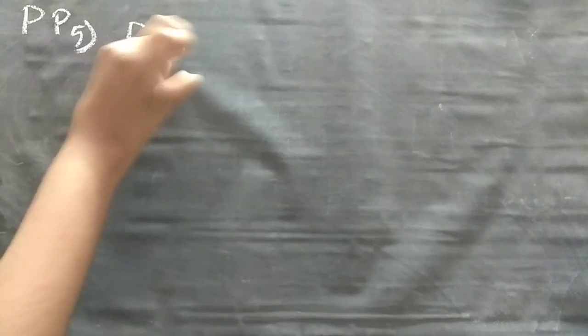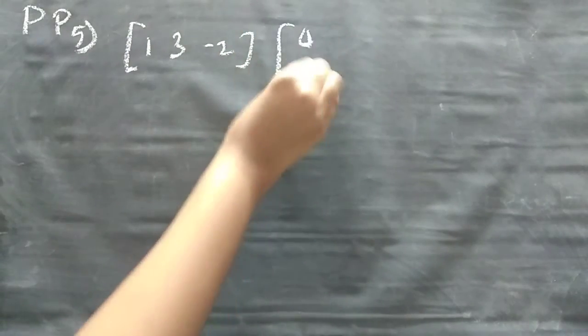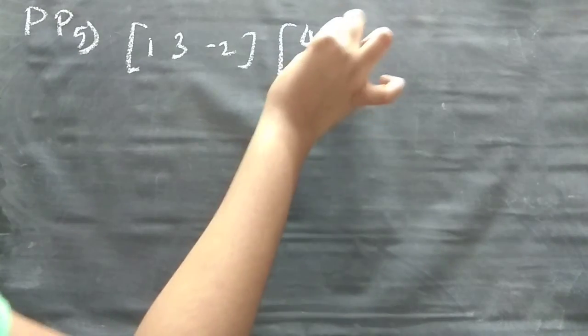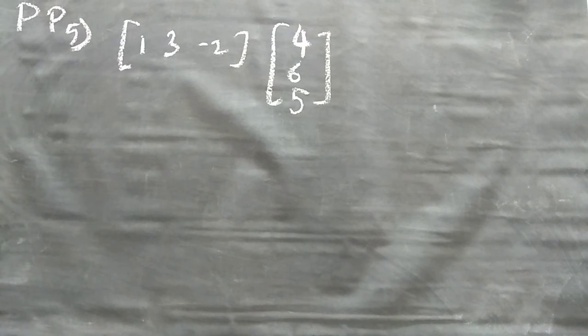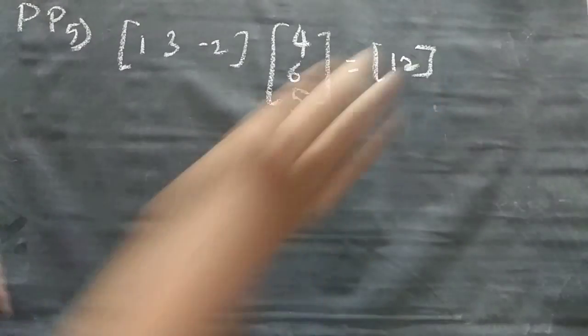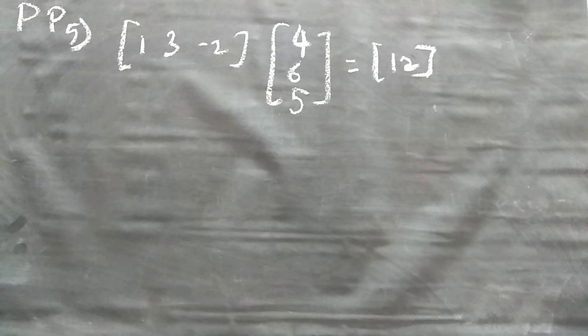Now [1, 3, -2] and you have [4, 6, 5]. Now this one we have to multiply. Now no sign wins, right. So when you multiply, the steps I will say now. Like 4 plus 18 minus 10. That is equal to 4 plus 18 minus 10. That is equal to matrix of 12. Option D you can take.